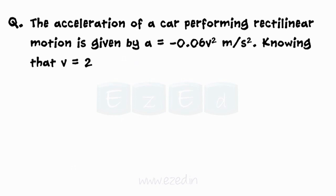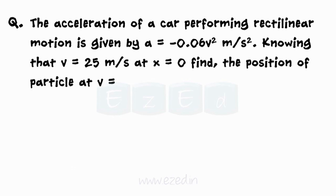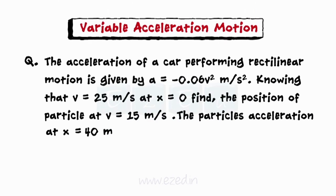Knowing that v = 25 m/s at x = 0, find the position of the particle at v = 15 m/s and the particle's acceleration at x = 40 meters.